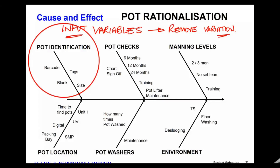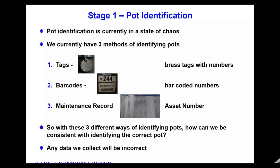The first thing Lee identified is that they had three different ways of identifying the pot — barcodes, tags, and some with no information at all. There are also identification sheets and an asset number. So you can identify the pot by a tag, by a barcode, or by an asset number. Could we think of any more ways to identify the same piece of equipment? All three were being used simultaneously.